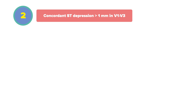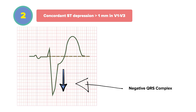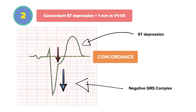The next criteria is concordant ST depressions greater than one millimeter in leads V1 through V3. Here you see a negative QRS complex and concordant ST depression, because both the QRS and ST segments are going in the same direction. When you see this in V1 to V3, you assign a score of three.